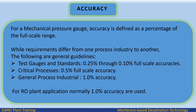Accuracy: For a mechanical pressure gauge, accuracy is defined as a percentage of the full scale range. General guidelines are: test gauges and standards — 0.25% to 0.1% full scale accuracy; critical processes — 0.5% full scale accuracy; general process industrial — 1% accuracy. For RO plant applications, normally 1% accuracy is used.